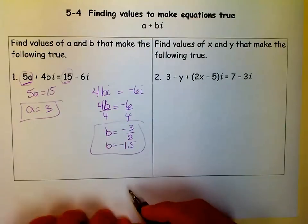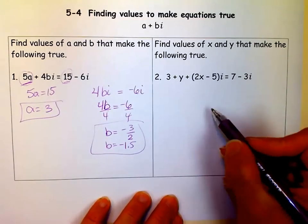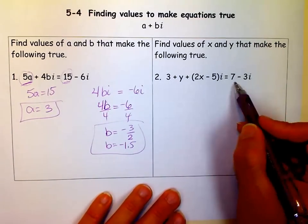So now we know what A and B are to make that equation true. So now we'll go over here and we'll do this again, but this time we have X and Y.